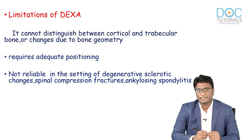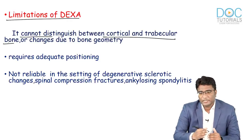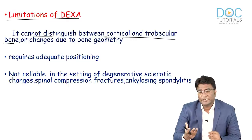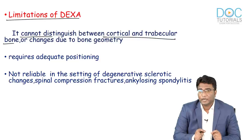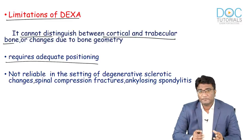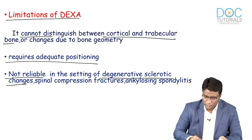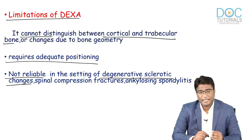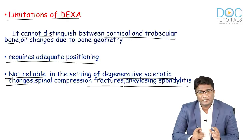The limitations of DEXA scan: being a 2D image, DEXA cannot distinguish cortical bone from trabecular bone. Quantitative CT gives that benefit but DEXA cannot differentiate trabecular bone separately. DEXA also requires proper adequate positioning — any rotation, scoliosis, or degenerative sclerotic changes like osteoarthritic subchondral sclerosis, fracture healing, or ankylosing spondylitis can make DEXA values unreliable.